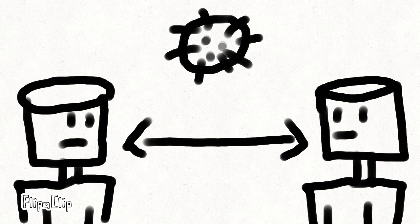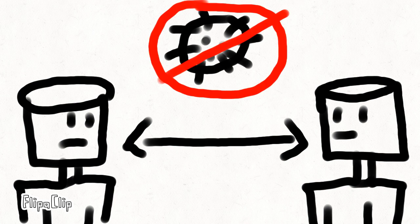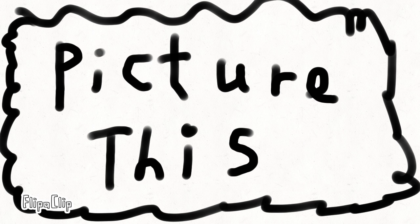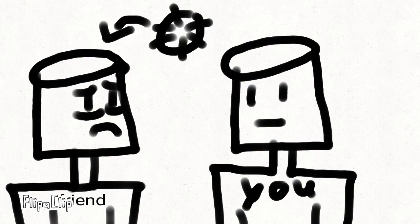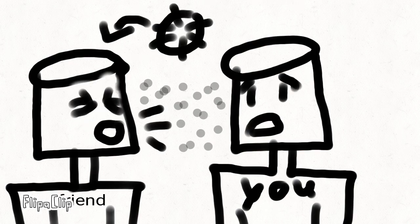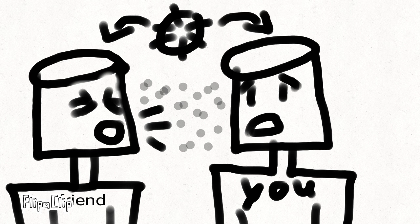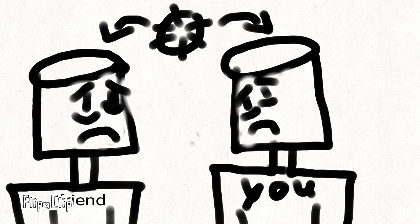Social distancing is the most important part of surviving the coronavirus. Let's say you have a friend and your friend has the virus, and he accidentally passes it on to you because the two of you weren't social distancing.